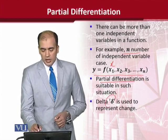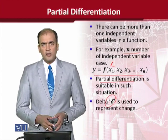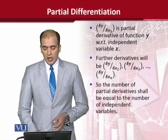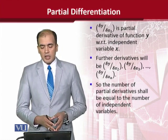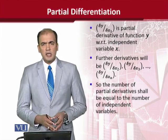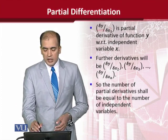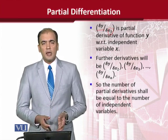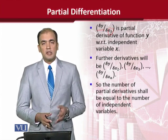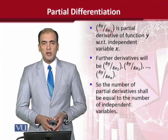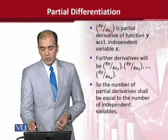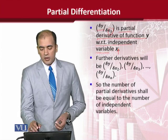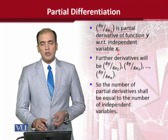And जो यहाँ पर हमने mention किया है, we shall see how we actually use this in various examples. Now, delta y over delta x — as you can see, dy over dx की जगह हमने लिखा delta y over delta x1. यहाँ भी हमने x1 लिखा, x नहीं लिखा, क्योंकि हमारे पास x1 से लेकर xn तक variables हैं. So, we can say that it is the partial derivative of function y with respect to independent variable x1. यह है पहला derivative.